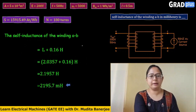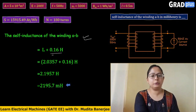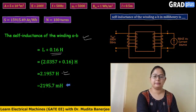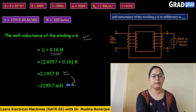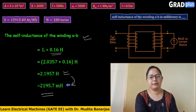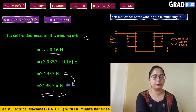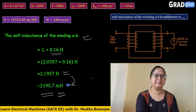The total self inductance of winding AB is the mutual inductance plus the leakage: 2.0357 + 0.16 = 2.1957 H. Converting to millihenry gives 2195.7 mH, which rounded to one decimal place is the correct final answer. Hope you understood this numerical problem — thank you for watching.